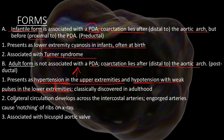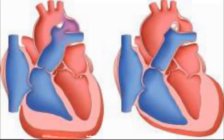Collateral circulation should develop across the intercostal arteries. These engorged anterior and posterior intercostal arteries usually cause notching of the ribs visible on X-ray — it looks like the lower portion of the ribs has been beaten off. The adult post-ductal form is associated mainly with the bicuspid aortic valve. So we have two forms of aortic coarctation.